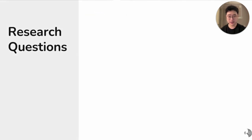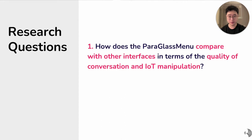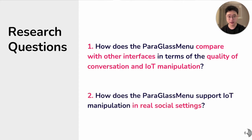With this system, we further proposed two research questions. First, how does Paragraphs Menu compare with other interfaces in terms of the quality of IoT manipulation and conversation? And second, how does Paragraphs Menu support IoT manipulation in real social settings?